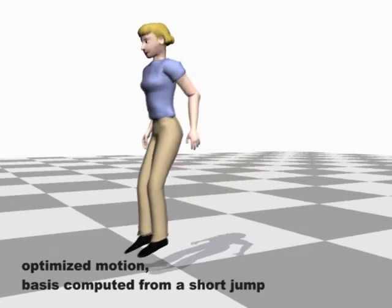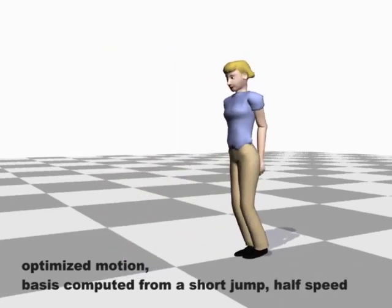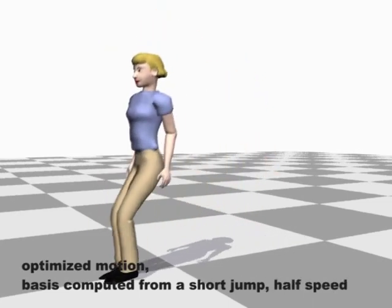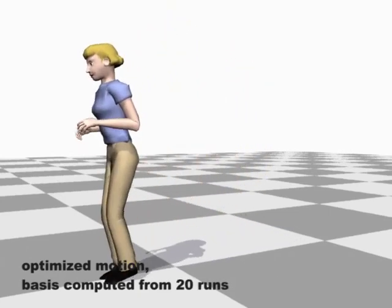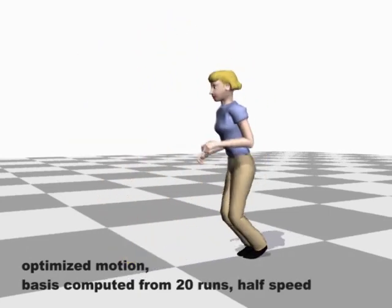A basis computed from a short jump does not allow the optimizer to generate a longer jump. A low-dimensional basis computed from twenty runs is inappropriate for generating a jumping motion.